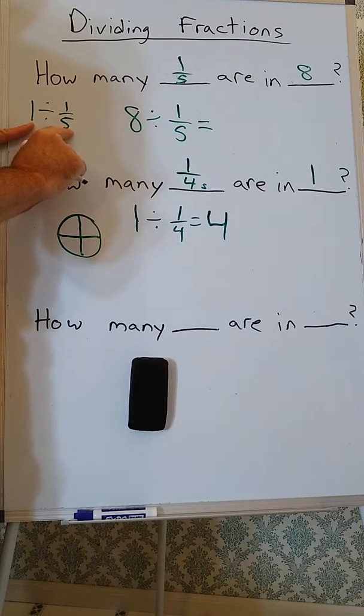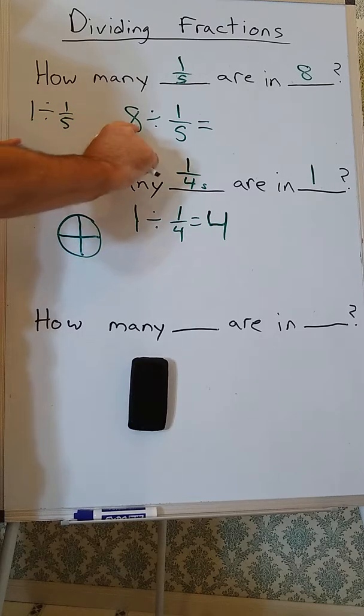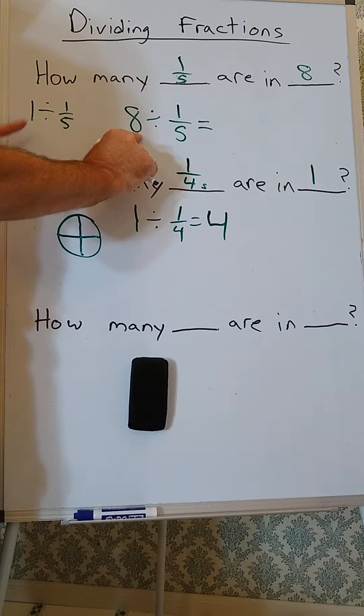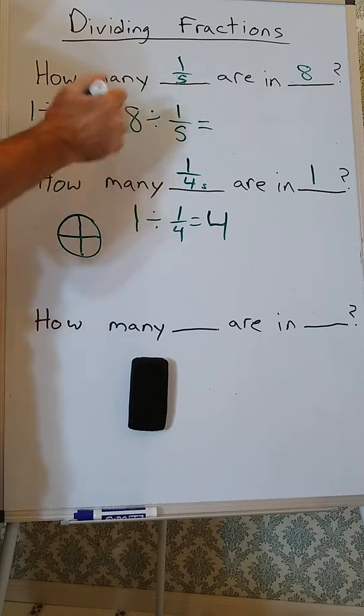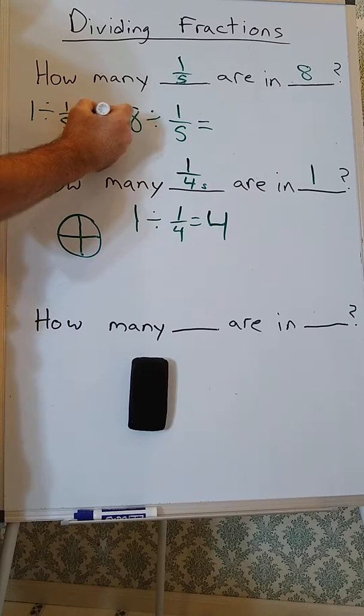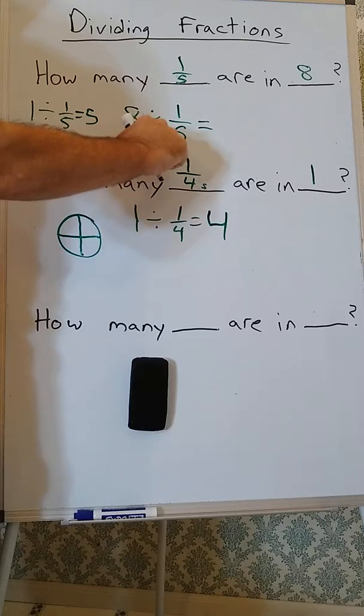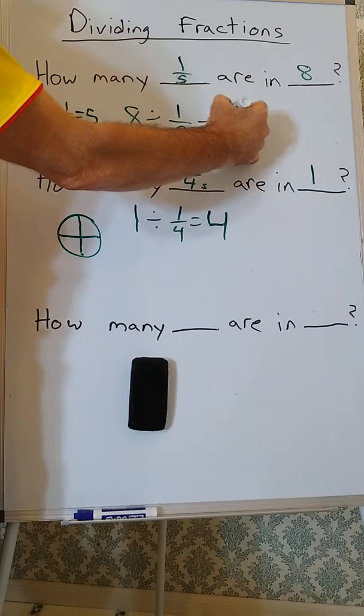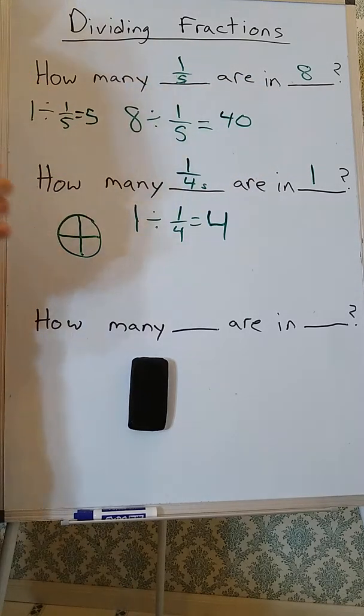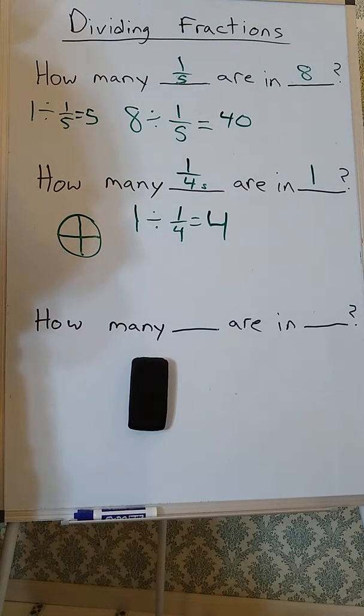Well, there are going to be 5 fifths in 1, and now I have 8 ones. And each of those will have 5 fifths. So, 8 divided by 1 fifth is 40.